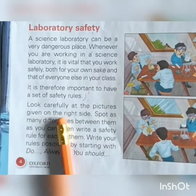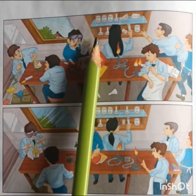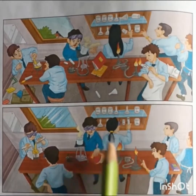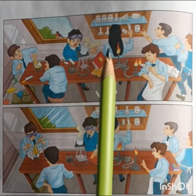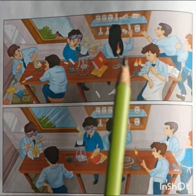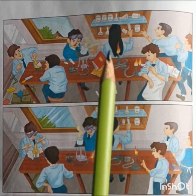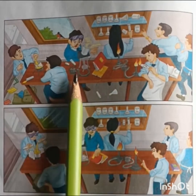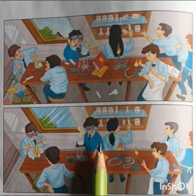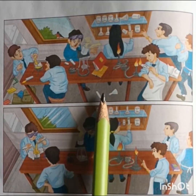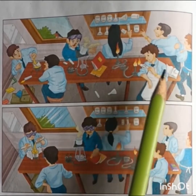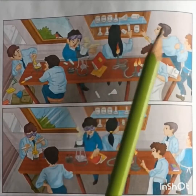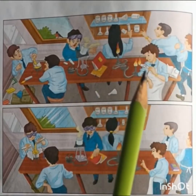Look carefully at the picture given on the right side. We are going to compare both pictures. In this picture, the girl does not tie her hair, but in this picture, the girl ties her hair. You should always tie your hair because there is a chance your hair could catch fire. You should wear safety goggles in a science laboratory to protect your eyes from reactive chemicals. Do not use cracked tubes. Eating and playing with fire should be strictly prohibited. You should not touch any chemical without your teacher's permission, because some chemicals are very harmful.